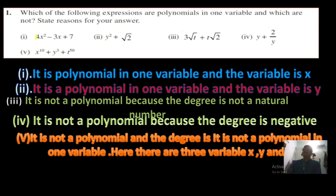Now I am showing you the answers on the slide. The first question, 4x² minus 3x plus 7 — its answer is: it is a polynomial in one variable, and the variable is x. The second question, y² plus 2 — yes, it is a polynomial in one variable and the variable is y. The third one, 3√t, it is not a polynomial because the degree is not a natural number.